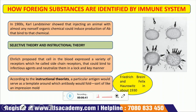Moving to the next topic — how foreign substances are identified by the immune system. In the 1900s, Karl Landsteiner showed that injecting an animal with almost any non-self organic chemical could induce production of antibodies that bind to that chemical. Ehrlich proposed that cells in the blood expressed a variety of receptors — which he called side chain receptors — that could bind to infectious agents in a lock and key manner. This theory was accepted with minor corrections: instead of one cell making many receptors, each cell makes many copies of just one membrane-bound receptor, hence specificity.